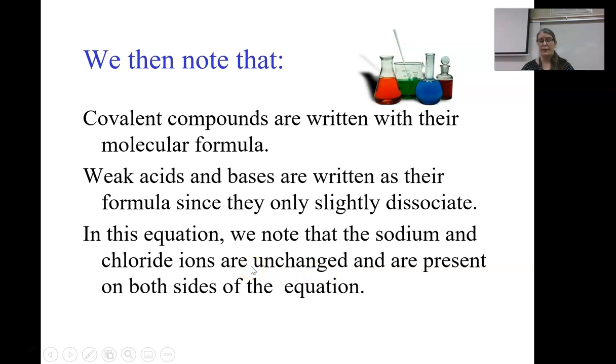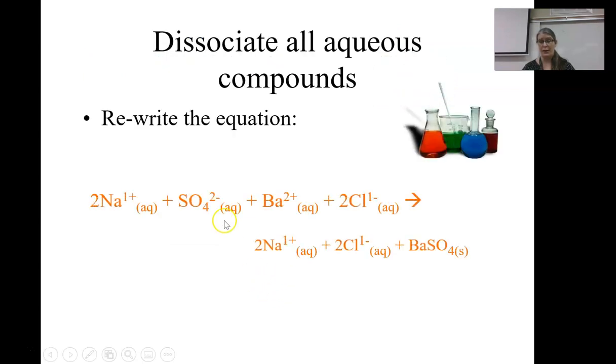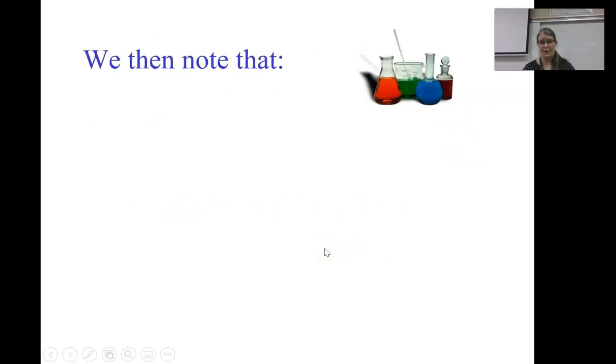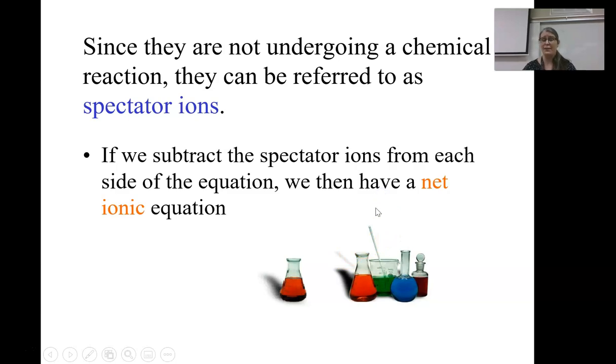If I look back at my equation I just wrote, the sodium and the chloride ions are both unchanged and present on both sides. Two aqueous sodiums in the reactants, two aqueous sodiums in the product, two aqueous chlorides in the reactants, two aqueous chlorides in the product. Nothing really happened to these. Since they didn't really undergo any kind of chemical reaction, they are referred to as spectator ions. And remember, spectator ions are what we are trying to get rid of in our net ionic equation.